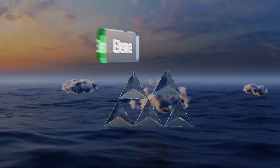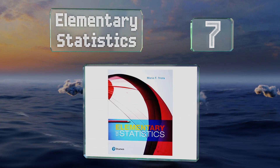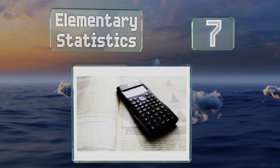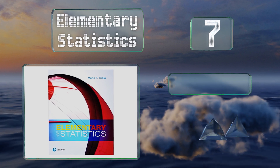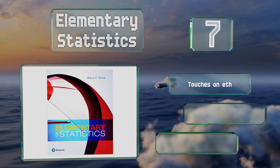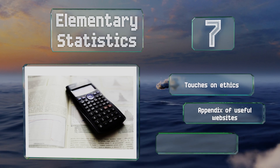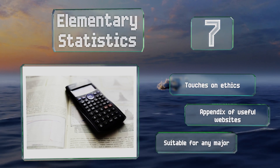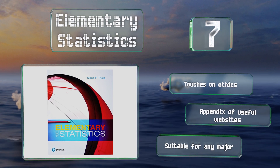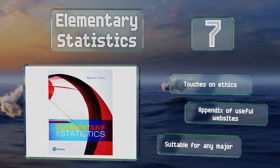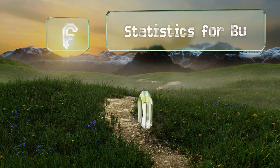At number 7, designed to cater to students of all backgrounds, Elementary Statistics provides an abundance of data sets, examples, and exercises to help readers practice and internalize what they learn. It brings the material to life by relating it to real-world applications. It touches on ethics and includes an appendix of useful websites. This one's suitable for any major.